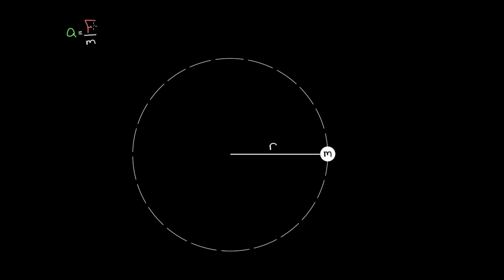We know from Newton's second law that the acceleration is proportional to the force. What we would like to have is some sort of rotational analog of this formula — something that would tell us we'll get a certain amount of angular acceleration for a certain amount of torque. And you could probably guess that angular acceleration is gonna have torque on top, because torque is gonna cause something to angularly accelerate. And then on the bottom, maybe it's mass, maybe it isn't. If we had this formula — this rotational analog of Newton's second law — then by knowing the torque, we could figure out what the angular acceleration is, just like by knowing force, we could tell what the regular acceleration is.